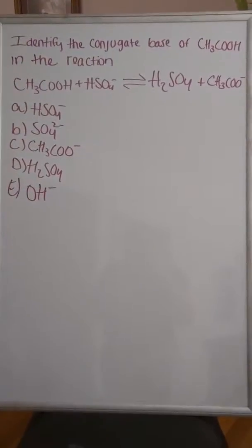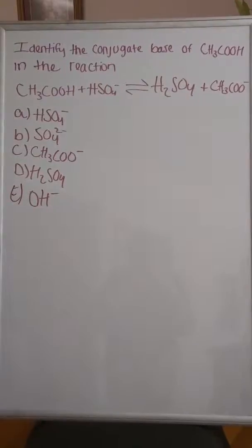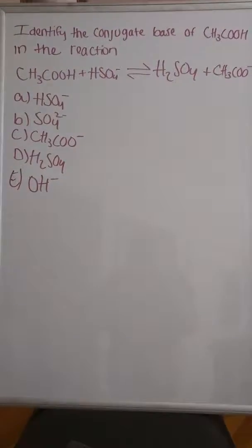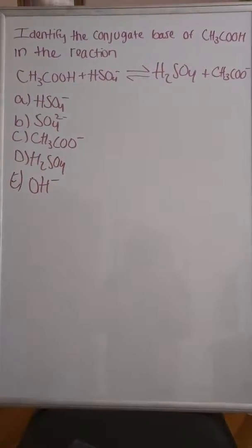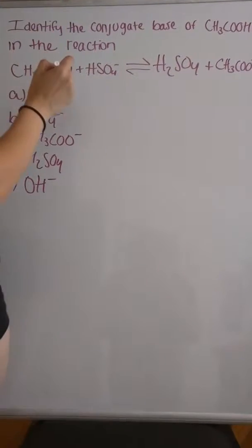Conjugate base of acetic acid in the reaction CH3COOH plus HSO4- goes to H2SO4 plus CH3COO-. So first, you want to group the ones that look alike.